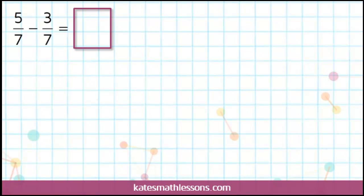In this problem we've been asked to subtract two fractions that have the same denominator. We have 5 7ths minus 3 7ths. If you're new to adding or subtracting fractions, it can help to draw a picture of them so you can visualize what's going on.